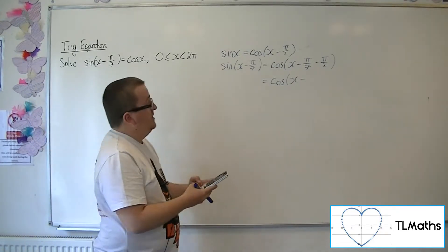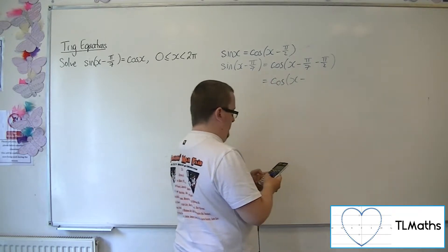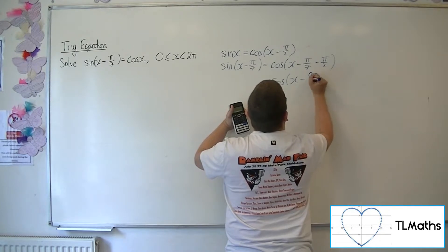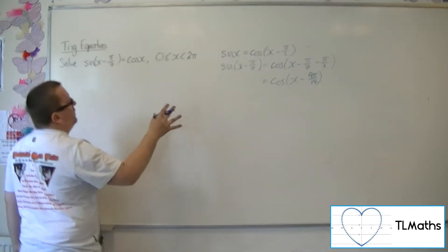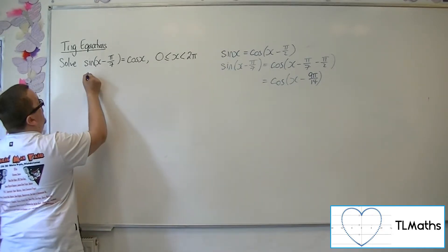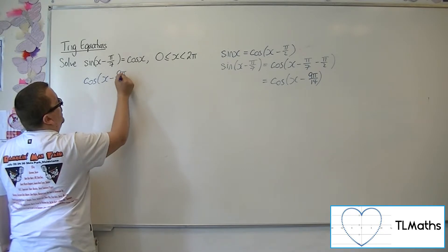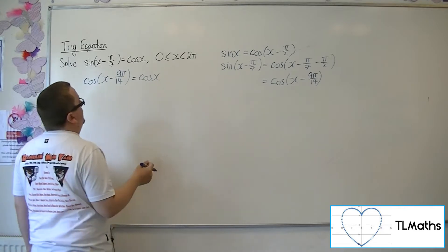So, 1 over 7 take away 1 half, sorry, minus 1 over 7 take away 1 half, is minus 9 fourteenths, so minus 9 pi over 14. So sine of x minus pi over 7 is cosine of x minus 9 pi over 14, and I'm solving that equal to cosine of x.